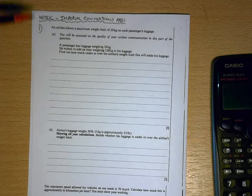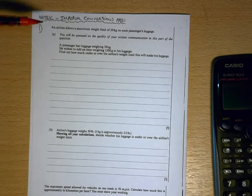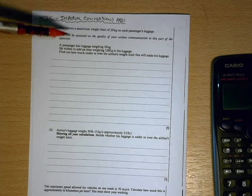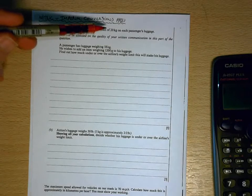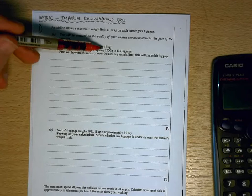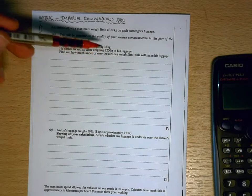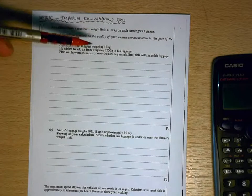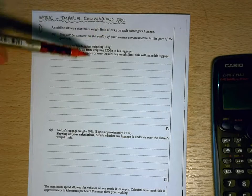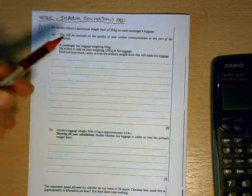Okay, so this first question is to do with the maximum weight limit of luggage getting onto a plane. This particular airline has a maximum weight limit of 20 kilograms. The passenger has luggage weighing 18 kilograms and wishes to add an item weighing 1200 grams to his luggage. In order to find out whether or not this is over or under the 20 kilogram limit, we need to add these two values together, but we can't do that when one's in kilograms and the other's in grams.